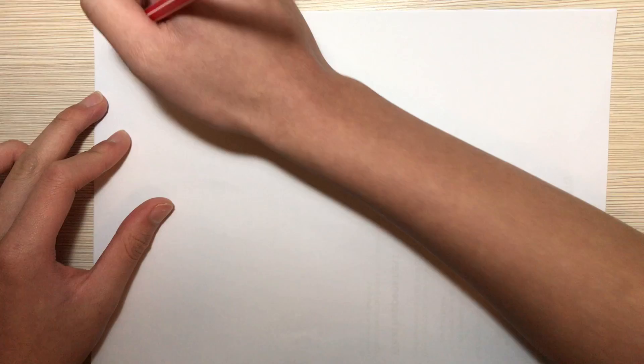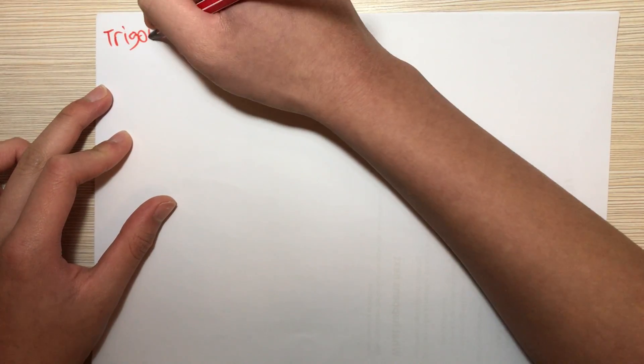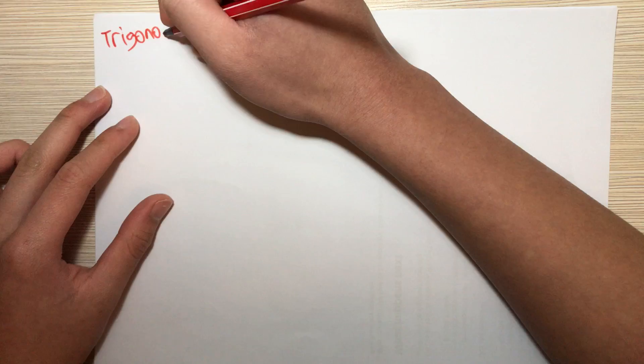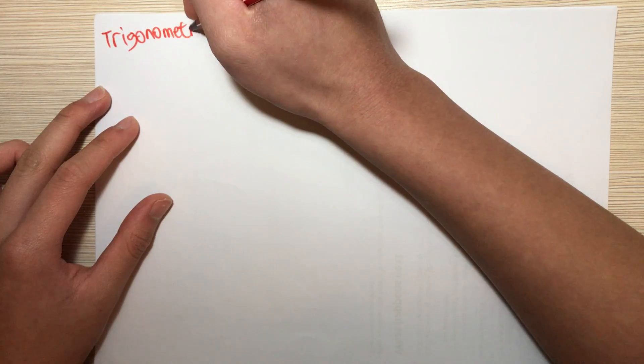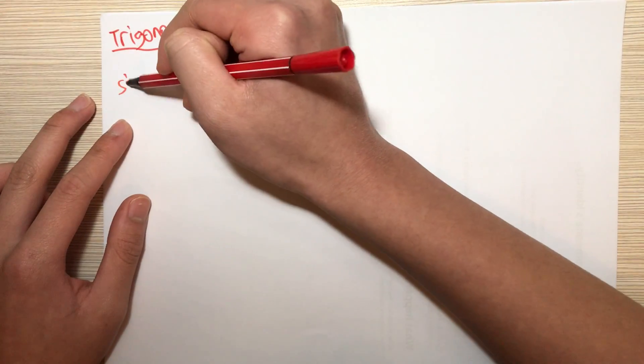So recently a lot of friends asked me about trigonometry, and today we are going to talk about some basic concepts on trigonometry. I believe that you have been wondering what are the three buttons on the calculator: SIN, COS, and TAN.